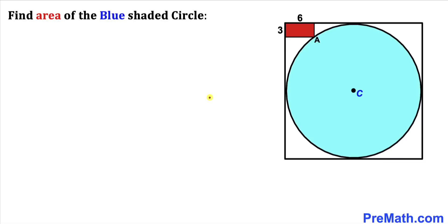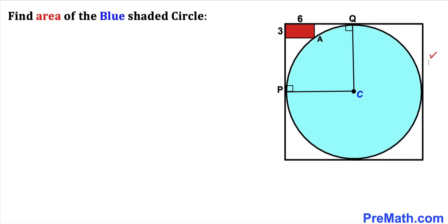Let's get started with the solution. C is the center of this circle, and these points are the points of tangency. Let me call this point P and this point Q. Now let's connect these points to the center. These are going to be our radii of this blue circle — let me call each radius lowercase r.